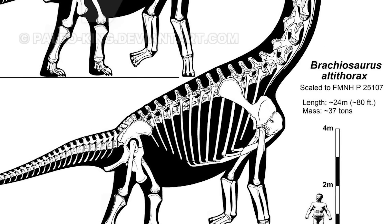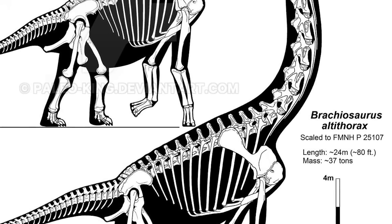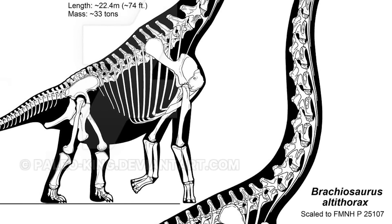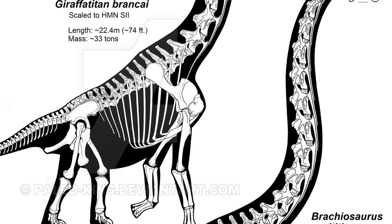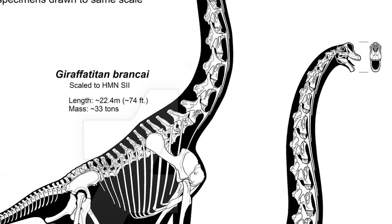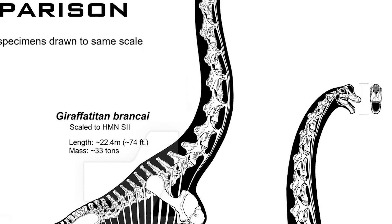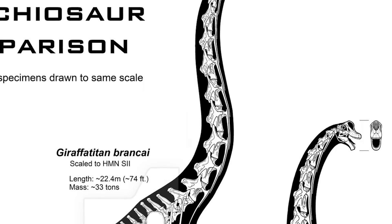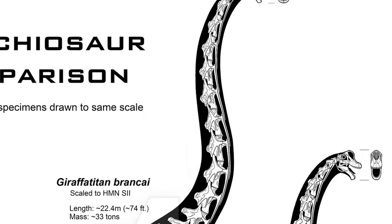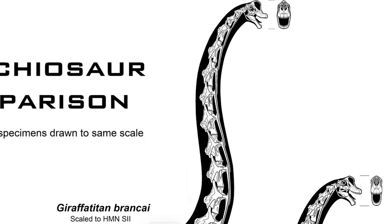Their overall body shape, even from a far-off view, is the most apparent signifier of their differences, with Brachiosaurus having a 23% longer dorsal vertebral series as well as a taller and longer tail, whereas Giraffatitan — like, well, a giraffe, fitting to their genus name — had a more compact body with an even shorter tail, though overall being slimmer.